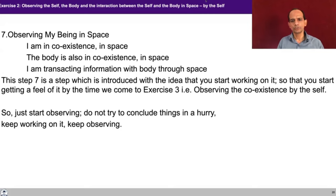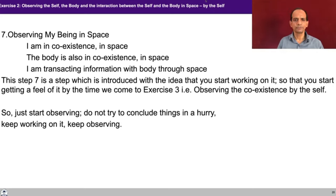If you look at steps one to six in exercise two, so far we have been trying to observe the body, the transaction between the self and the body, and we are trying to make out the basis on which you associate meaning to the sensation that you get from the body and the way you react or respond. But in step seven, we have taken a shift — now we are talking about space also. This step seven is introduced with the idea that you start working on it so that you start getting a feel of it by the time we come to exercise three. Just start observing it. Do not try to conclude things in a hurry. Keep working on it. Keep observing.